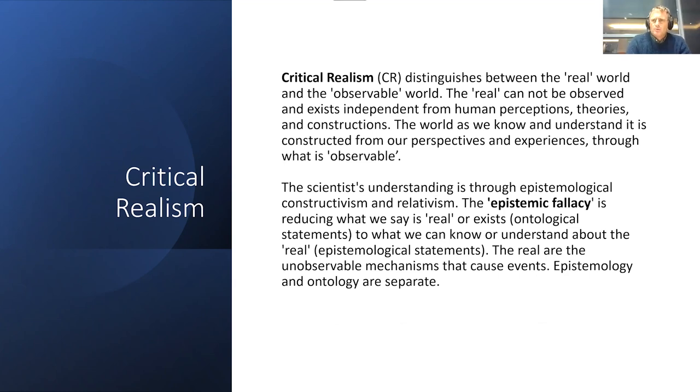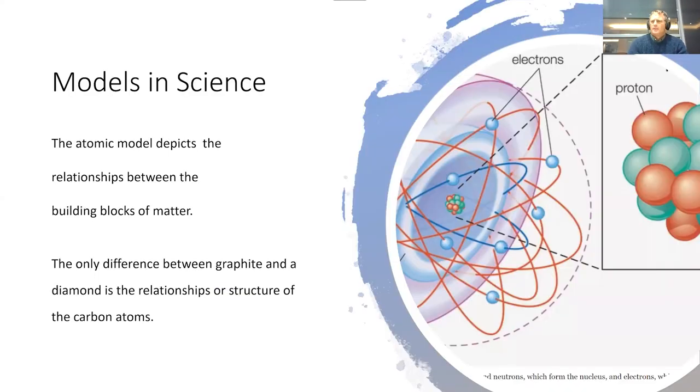In the philosophical world, it's referred to as the epistemic fallacy. I follow the view of Roy Bhaskar in terms of critical realism. I'm going to skip this slide just to make up some time, but I'm going to take the atomic model as an example. The atomic model depicts the relationships between the building blocks of matter. For example, the only difference between graphite and diamond is the relationships or structure of the carbon atoms.